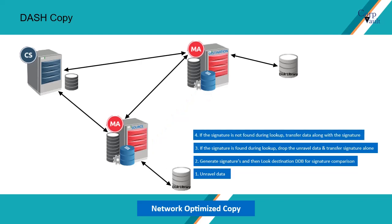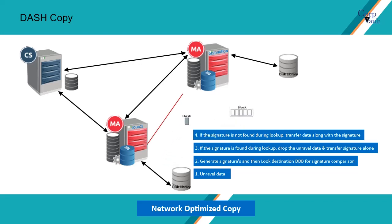If the signature is new — that is, the data block is not present on the destination media agent — then the data block along with the signature is sent to the destination media agent. The data blocks are stored on secondary disk and the signatures are stored in the destination DDB.